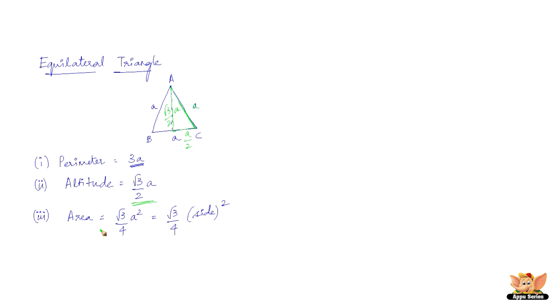Therefore the area is ½×base×height, so ½×a×√3/2×a which gives us √3/4×a² or √3/4×side². Hence we've got the area of the equilateral triangle.